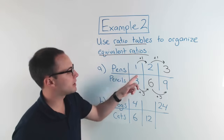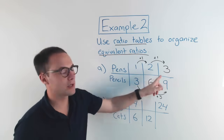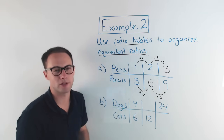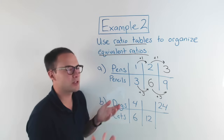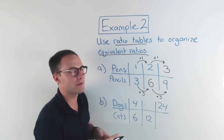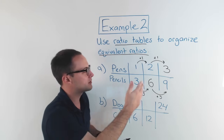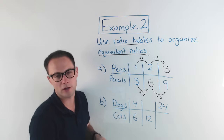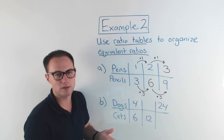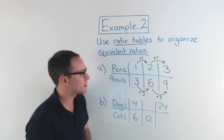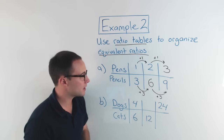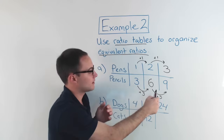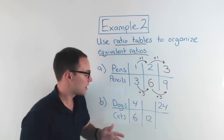So one to three, two to six, three to nine — those are all equivalent ratios. If you write it like a fraction: one-third, two-sixths, three-ninths — those are all equivalent fractions. Same kind of thing. So we can find equivalent ratios by adding, like we did there.